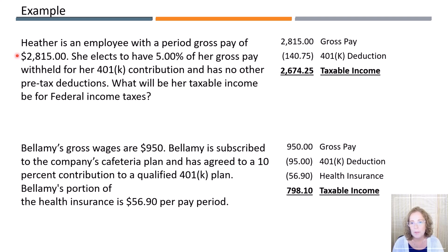Let's look at two examples of how pre-tax deductions reduce period wages to arrive at taxable income. The first example is for Heather, who is an employee with a period gross pay of $2,815. She elects to have 5% of her gross pay withheld for a 401(k) contribution and has no other pre-tax deductions. We start by writing down the gross pay of $2,815 and then calculate the 401(k) deduction, which is $2,815 times 5% or $140.75. We subtract the pre-tax deduction from the gross pay, which results in Heather's taxable income of $2,674.25.